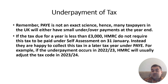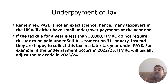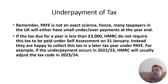PAYE is not an exact science — there will always be underpayments or overpayments of tax, and many taxpayers will have an underpayment at the end of the year. If the tax due for a year is less than £3,000, HMRC does not require it to be paid under self-assessment on 31 January. Instead, they collect it in a later tax year under PAYE by changing the tax code — giving a lower personal allowance so the unpaid tax is automatically recovered.